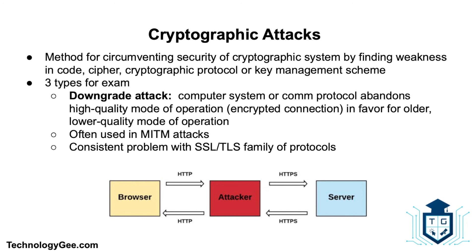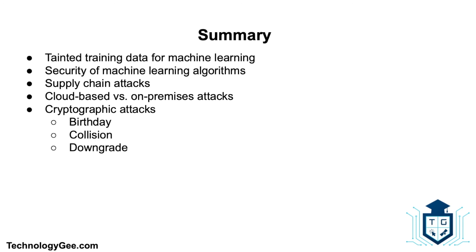This was my quick video on adversarial artificial intelligence attacks, where we talked about tainted training data for machine learning and the security of machine learning algorithms. In addition, we talked about supply chain attacks, cloud-based versus on-premises attacks, and cryptographic attacks such as birthday attacks, collision attacks, and downgrade attacks. If you've gotten something valuable out of this information, leave a comment, hit the like button, share this video, and most importantly subscribe to this channel. Also check out my website Technology G to get up to date on the latest to help you successfully pass the CompTIA Security+ 601 certification exam.